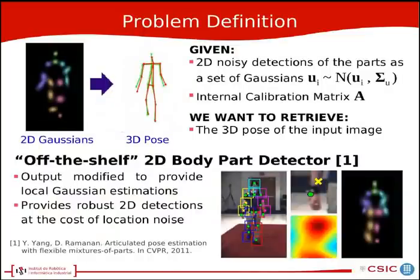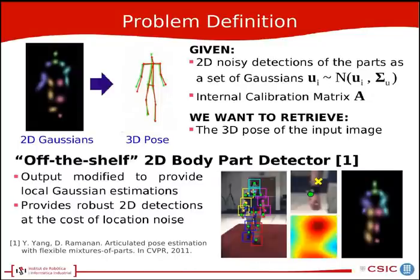We define the problem as given a set of 2D noisy Gaussians representing the 3D pose and the internal calibration matrix A of the camera, from this we retrieve the 3D pose of the input image. In order to obtain the Gaussians, we're using a 2D body part detector proposed by Yang and Ramanan and presented at 2011 CVPR, which we've modified to provide local Gaussian estimations instead of bounding boxes. This is done by fitting Gaussians on the center of the bounding box found through the classifier for each part, and we obtain the figures you can see in the lower right. This 2D body part detector provides robust 2D detections at the cost of location noise.